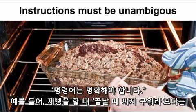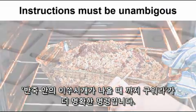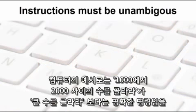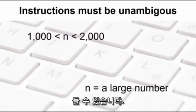Here are a few necessary understandings when thinking about designing algorithms for computing or otherwise. For example, when baking it is more clear to say 'bake until a toothpick comes out clean' rather than just 'bake until done.' An example for a computer could be 'choose a number between 1000 and 2000' instead of just 'choose a large number.'